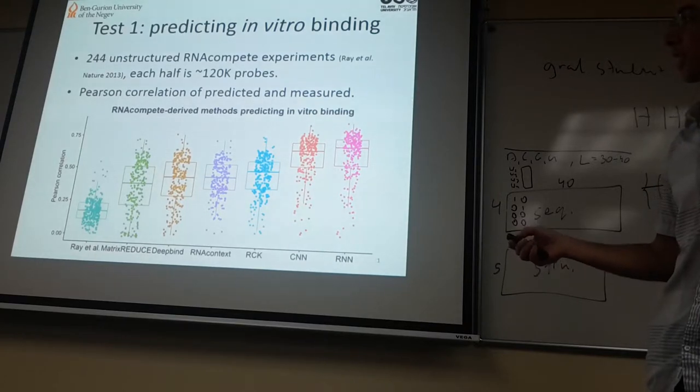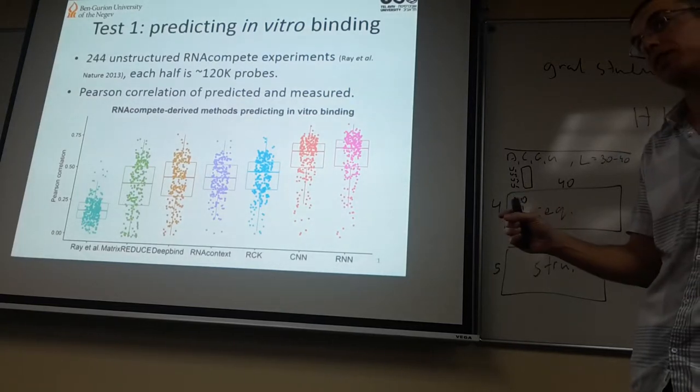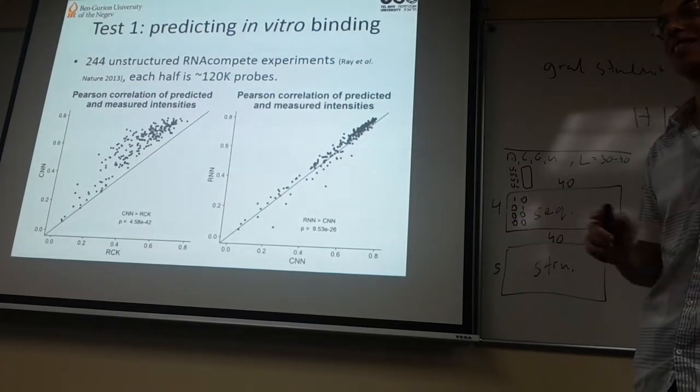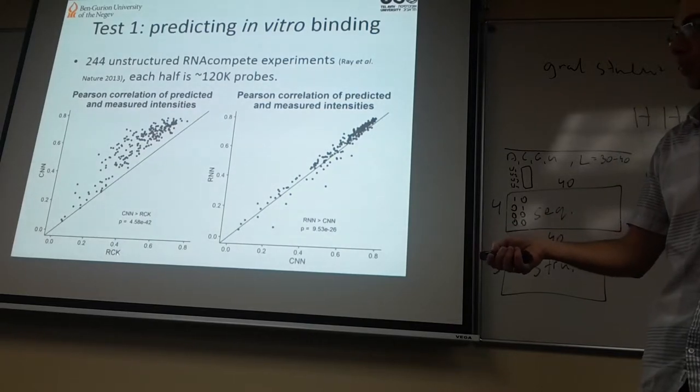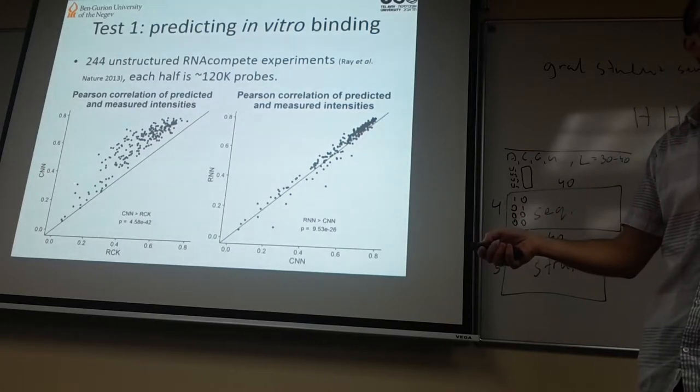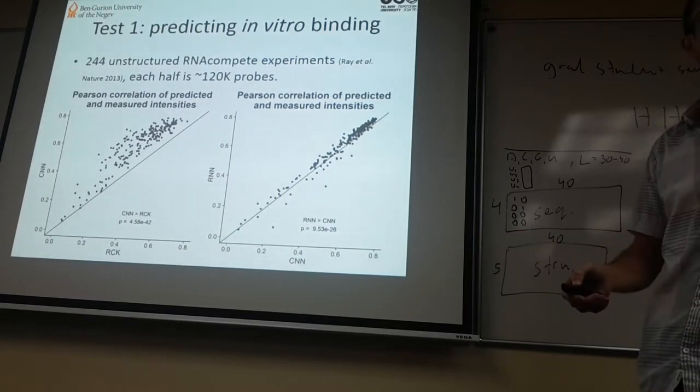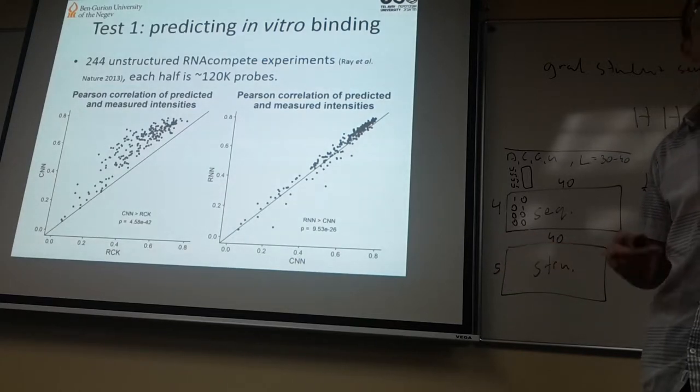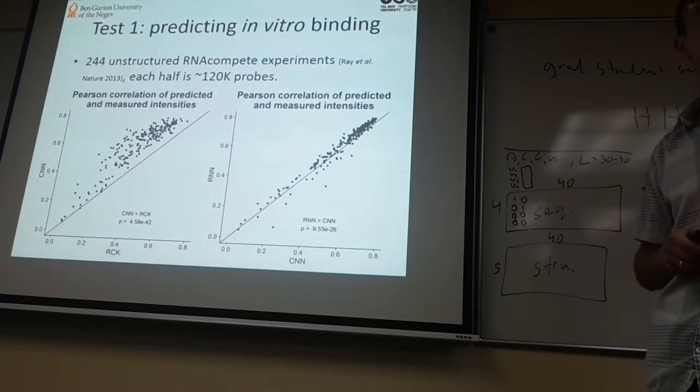Here I'm showing an aggregated number over 244 experiments where each experiment is a single protein. This is the pairwise comparison, so each dot is a protein. I'm comparing the two algorithms, for example CNNs, the convolutional neural nets, against RCK, my algorithm from a couple of years ago, and RNNs compared to CNNs. Each dot is one experiment, so you see this improvement in pairwise comparison.